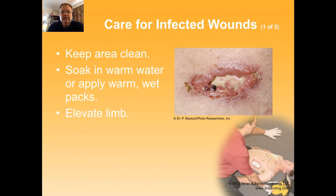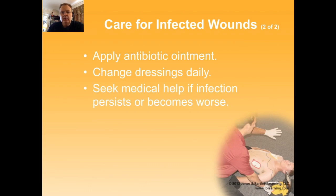If you think a wound is infected, keep it clean, soak it in warm water, or apply warm wet packs. The water washes away pus and superficial bacteria, while warmth increases blood flow so your immune system can fight the infection. Pus is just a combination of white blood cells, dead bacteria, and debris — getting rid of it removes extra debris. You can also elevate the limb. Apply antibiotic ointment on smaller wounds and change dressings daily or when soaked through with pus. If the infection continues, you'll need more advanced medical care — possibly oral or IV antibiotics.